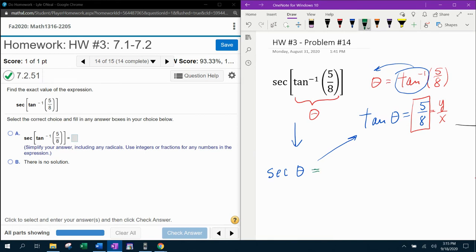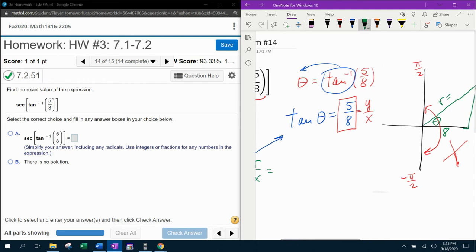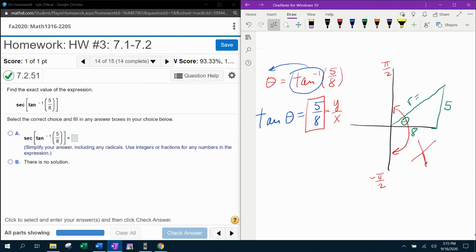And then we can come over here and find the secant. Remember, secant is the reciprocal of cosine. So if cosine is x over r, then secant would be r over x. Do you see that we actually need the radius? And we can find that with Pythagorean theorem.